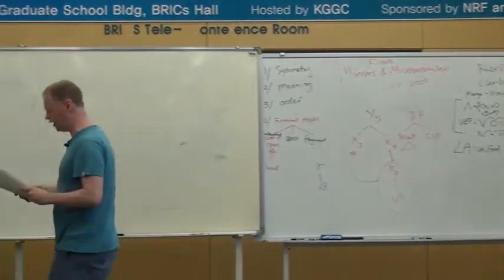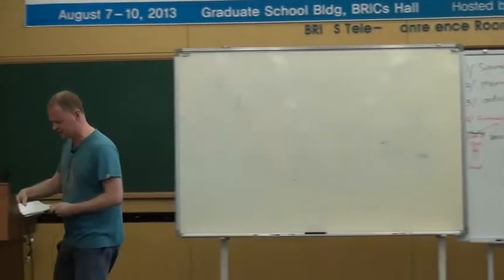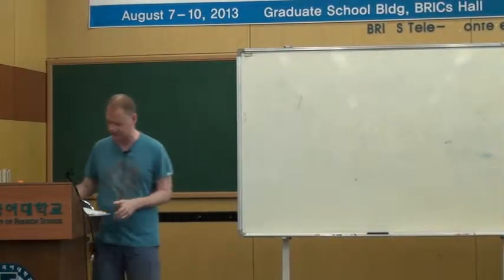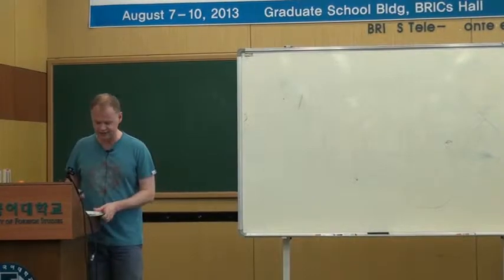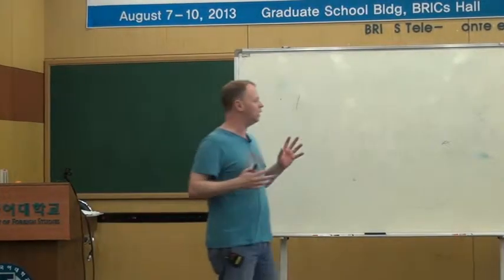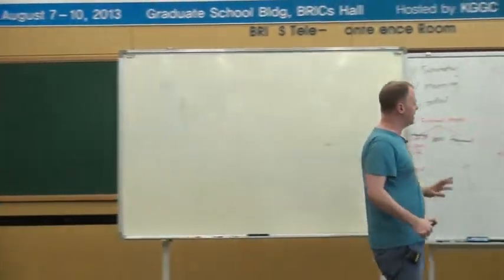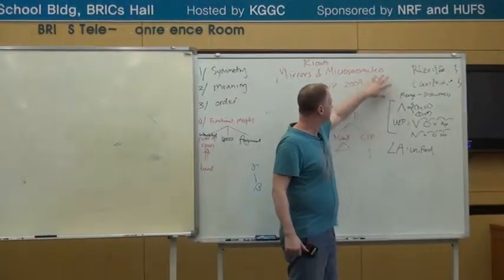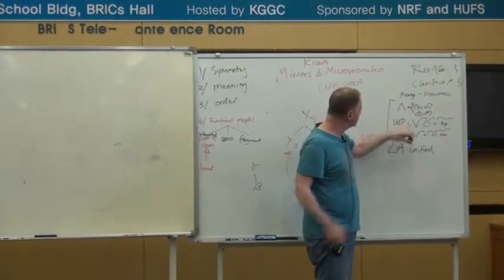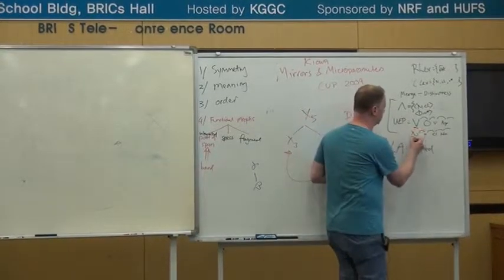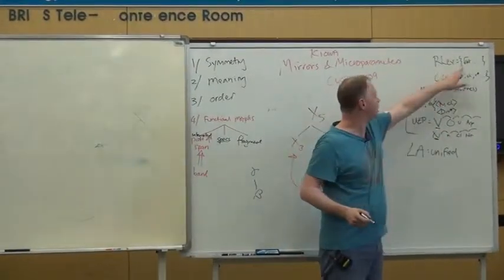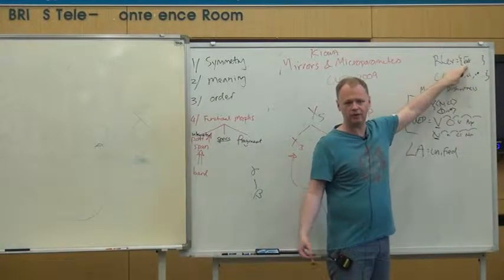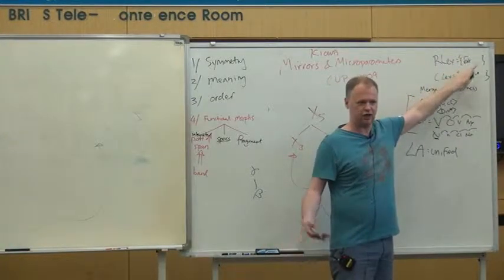However, it turns out there's a fairly straightforward solution to this, which actually has some very nice effects. The solution is: so far we've decided that we've got these universally sent projections, and what these very lowest ones do is they can label the roots. So 'cat' can be a noun, 'cat' can be an adjective, 'run' can be a verb.